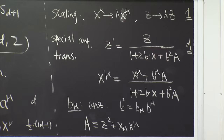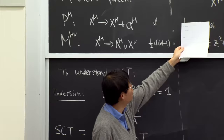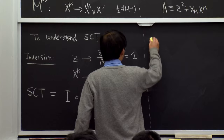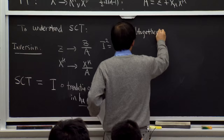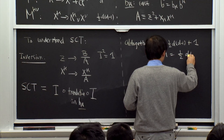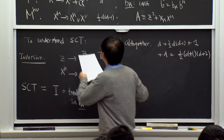Adding all the generators together — d translations, (1/2)d(d−1) Lorentz, 1 scaling, and d special conformal — gives a total of (1/2)d(d+1) + d + 1, which equals (1/2)(d+1)(d+2). You can verify this is precisely the number of generators of SO(d,2).